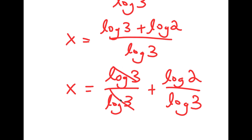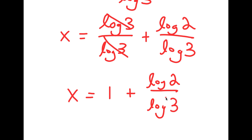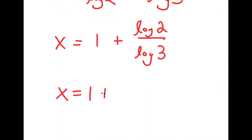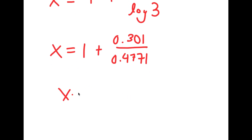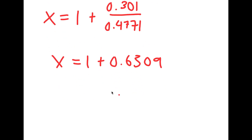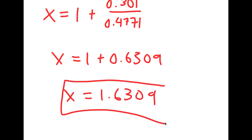I can rewrite this as log 3 over log 3 plus log 2 over log 3. Now, log 3 over log 3, these two cancel out. So I get x is equal to 1 plus log 2 over log 3. And log 2 is equal to 0.301, and log 3 is 0.4771. So this is going to equal 1 plus 0.6309, and 1 plus 0.6309 is 1.6309. So this is my answer.